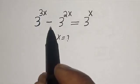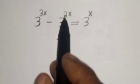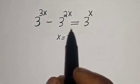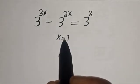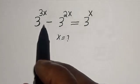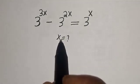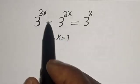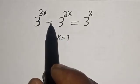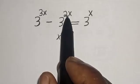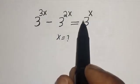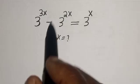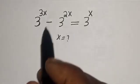3 raised to power 3x minus 3 raised to power 2x is equal to 3 raised to power x. What is the value of x? Hi everyone, welcome to my class. In this class we quickly want to find the value of x from this given equation. But before we proceed, please don't forget to like, share, comment and subscribe.